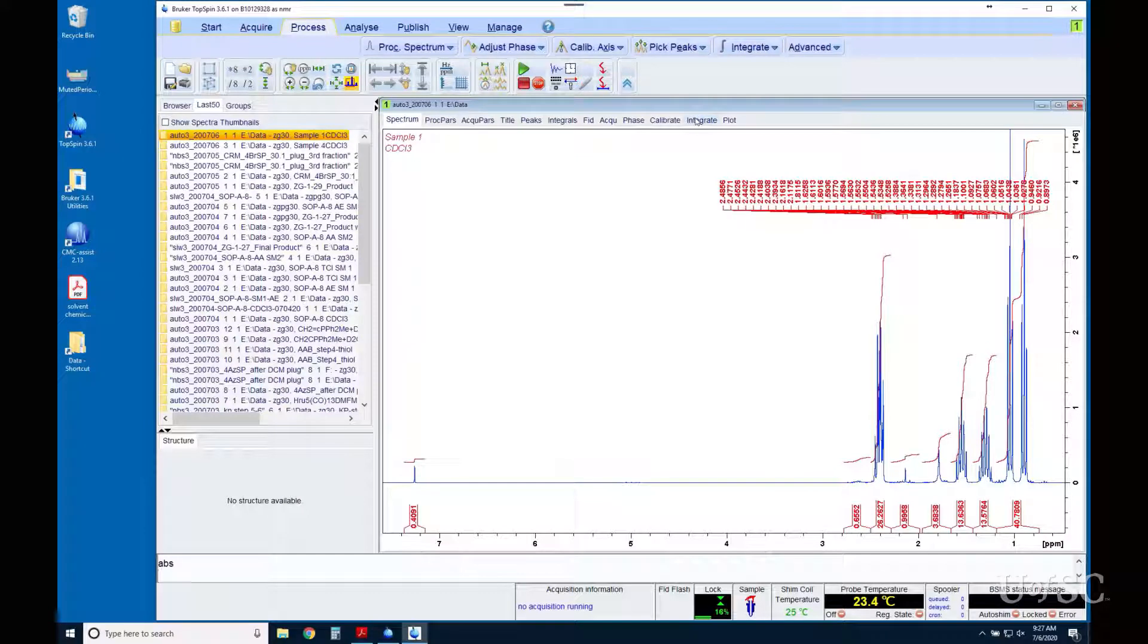If you want to manually edit integrals you should first remove the baseline correction applied during the auto processing by retransforming the FID with the EFP command. The spectrum phase should be checked and corrected if necessary.